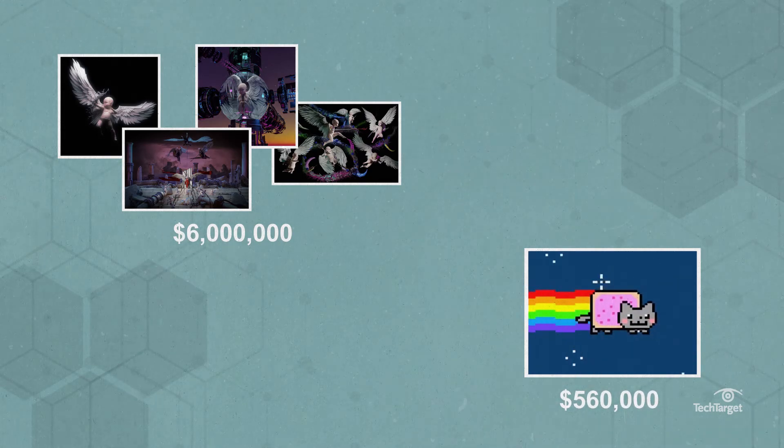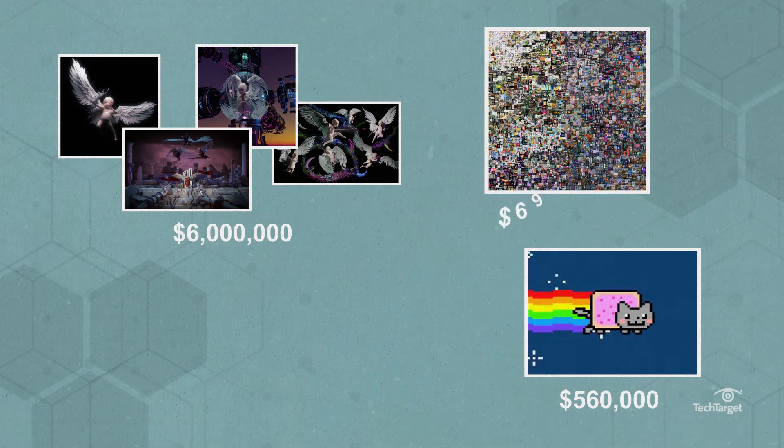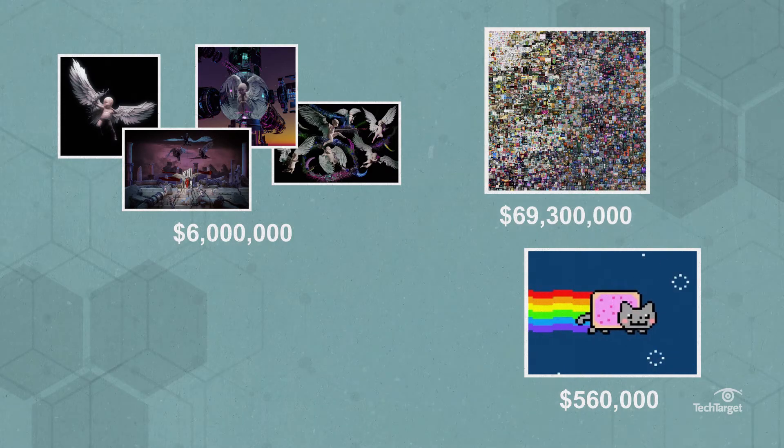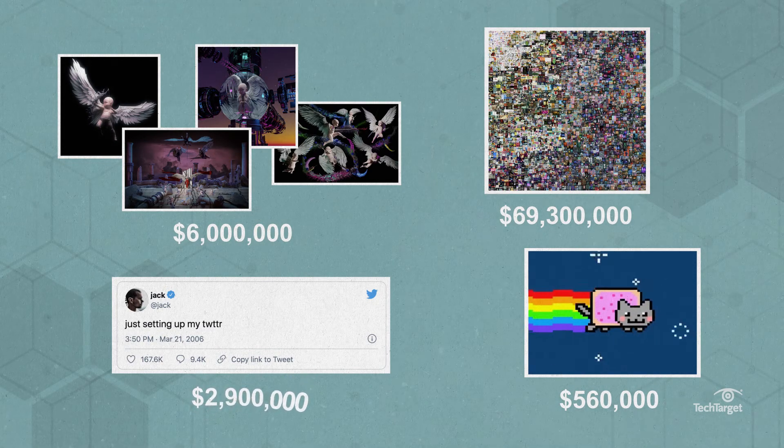In March, digital artist Beeple's Everydays: The First 5000 Days was the first piece to be auctioned at Christie's auction house selling for almost $70 million. Also in March, Twitter's founder Jack Dorsey sold his first tweet as an NFT for over $2.9 million.